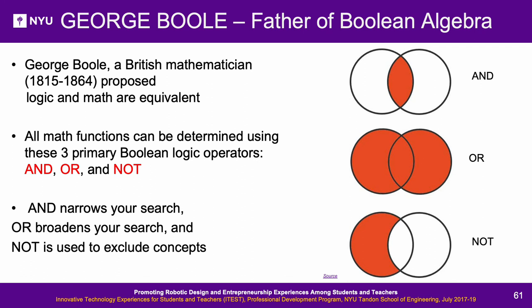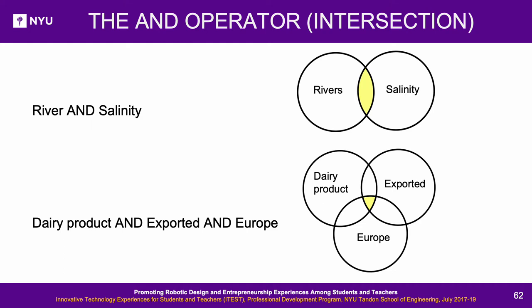George Boole — father of Boolean algebra — was a British mathematician (1815–1864) who proposed that logic and math are equivalent. All math functions can be determined using three primary Boolean logic operators: AND, OR, and NOT. AND narrows your search (intersection), OR broadens your search, and NOT is used to exclude concepts. For example, the AND intersection of food products that are dairy, from Europe, and exported gives those products meeting all three criteria.